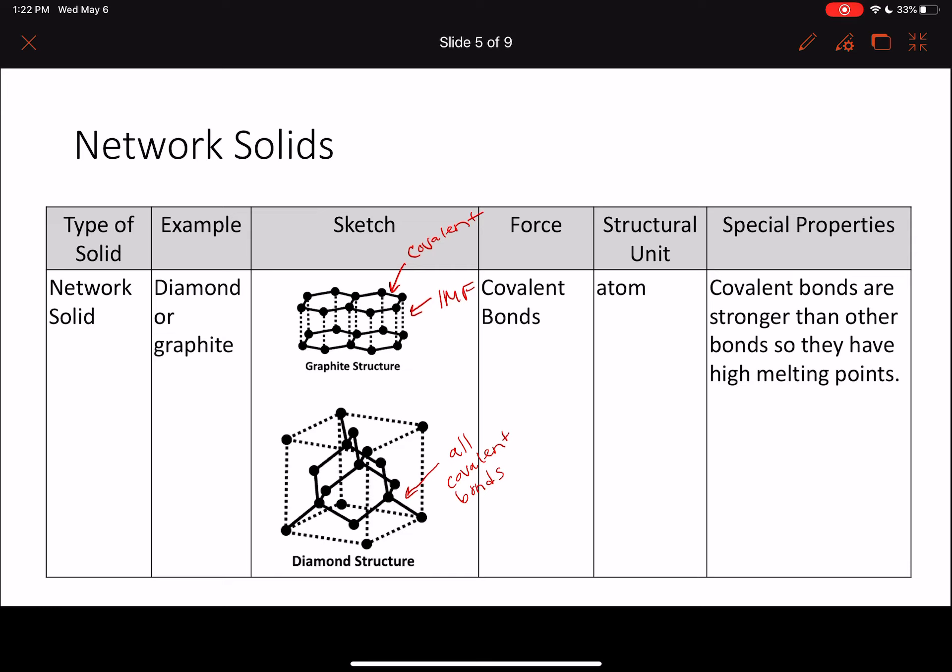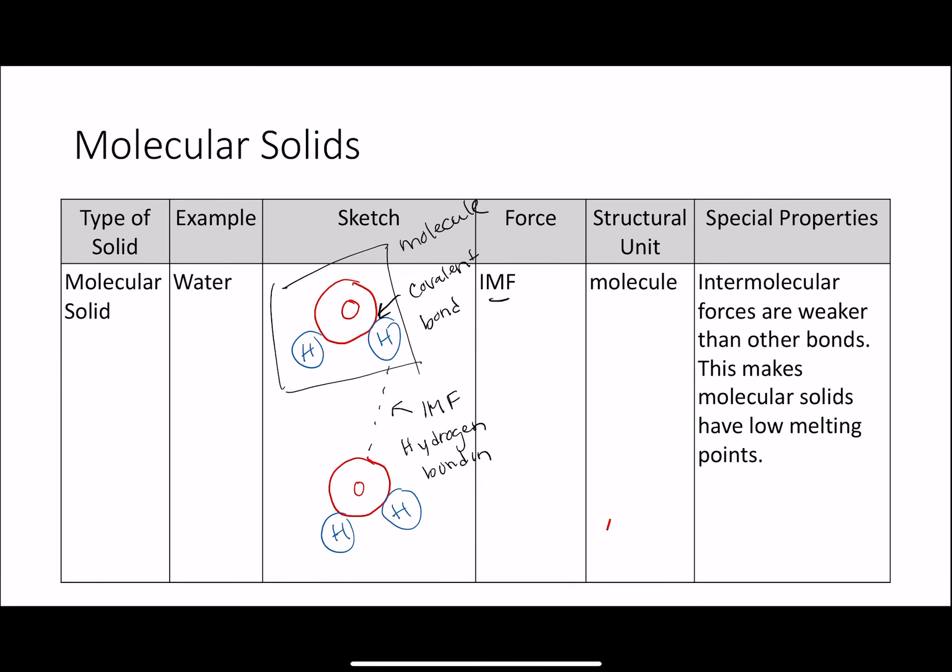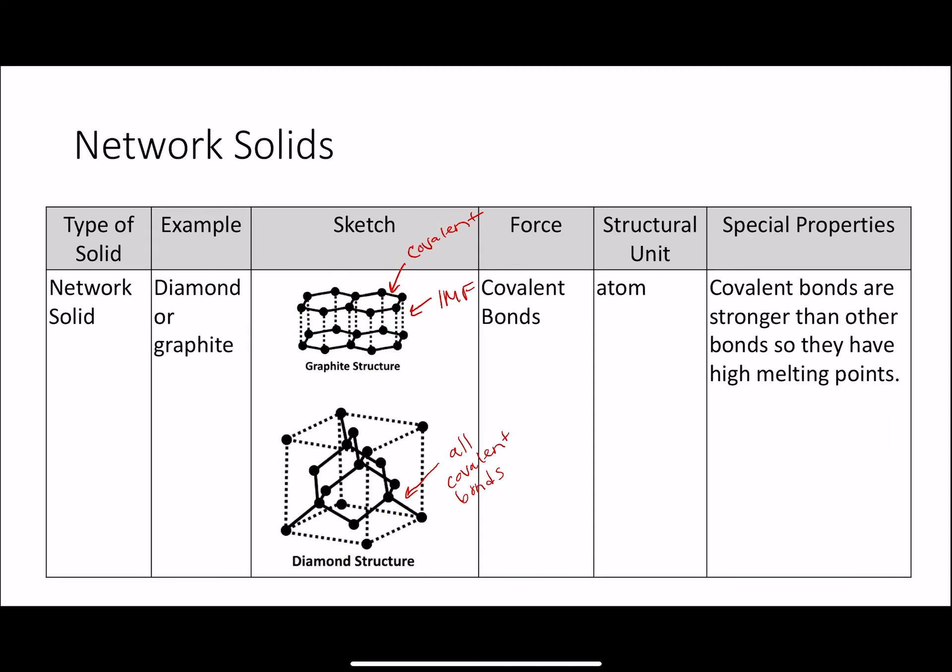We remember that in covalent bonds, we're sharing electrons, so that makes it a really strong bond. The force that holds together the network solid is a covalent bond. Each of these atoms is covalently bonded to the other atoms. This is different than our molecular solid. Molecular solid has the covalent bond within one molecule, but then the molecules are only held together weakly by intermolecular forces. In network solids, it's all held together by covalent bonds, which makes it really strong.